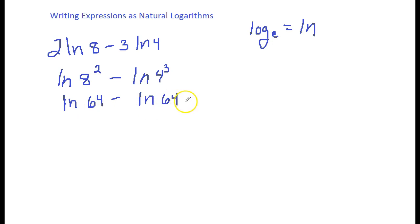Now I don't want you to put 0 here, okay, because it's not actually. Actually, we have to use that quotient property, and this is natural log of 64 over 64, so that means we have the natural log of 1.